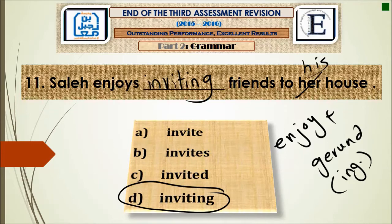Question number eleven: 'Salih enjoys ___ friends to her house.' Enjoy must also be followed by gerund — the ing form. So the answer is D: inviting. 'Salih enjoys inviting friends to his house.'